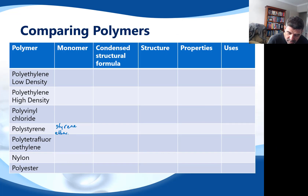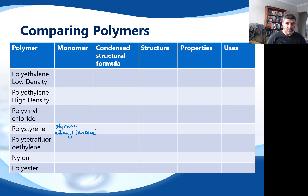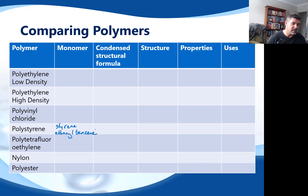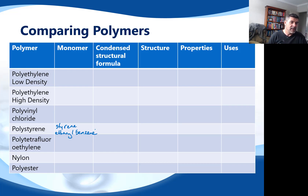Styrene is sometimes known as ethenyl benzene. Benzene is a dominant part of that name — while we could call it benzole ethene, because you can see it's an ethene molecule with a benzene ring on it, benzene has three double bonds so it takes precedence in naming. We name it on the basis of the benzene, and then it has an ethyl group with a double bond, so ethenyl benzene is really the name of the monomer.